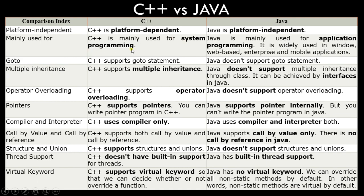C++ is mainly used for system programming — making system software like drivers, close to the OS, due to its use of pointers. Java is mainly used for application programming: Windows, web-based, enterprise, and mobile applications. C++ supports the goto statement; Java does not. C++ supports multiple inheritance; Java does not support it through classes, but it can be achieved via interfaces. C++ supports operator overloading; Java doesn't. C++ supports explicit pointer programming; Java supports pointers internally but you cannot create one explicitly — that access is only given to the system compiler and interpreter.